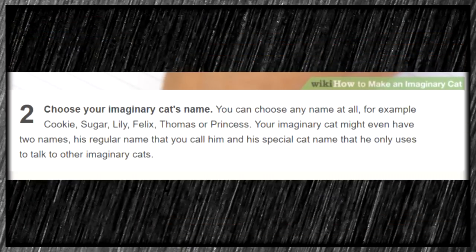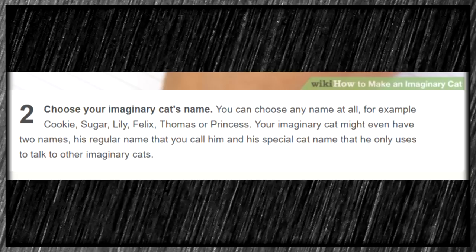Step two: choose your imaginary cat's name. You can choose any name — Cookie, Sugar, Lily, Felix, Thomas, or Princess, and only those. Your imaginary cat might even have two names: his regular name and his special cat name he only uses to talk to other imaginary cats. Our cat needs two names anyway — one for the dog and one for the cat. I think we already know what name we need. Brykevian. Oh, no. God, no, please. Brykevian is a monstrous melding of Brian and Kevin and Ian.